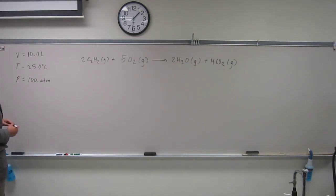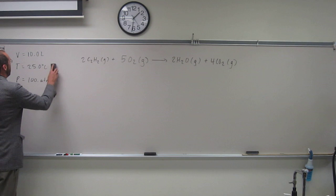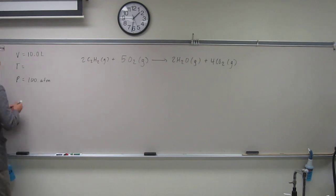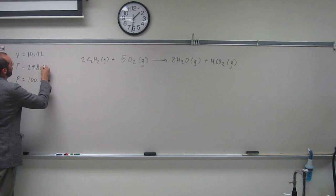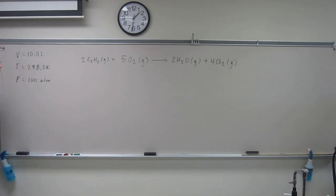In order to do this problem, liters is already in the units that we want, and the pressure is already in units of atm, so those are units we would like. What we're going to do is add 273 to this, so 298.0 Kelvin.